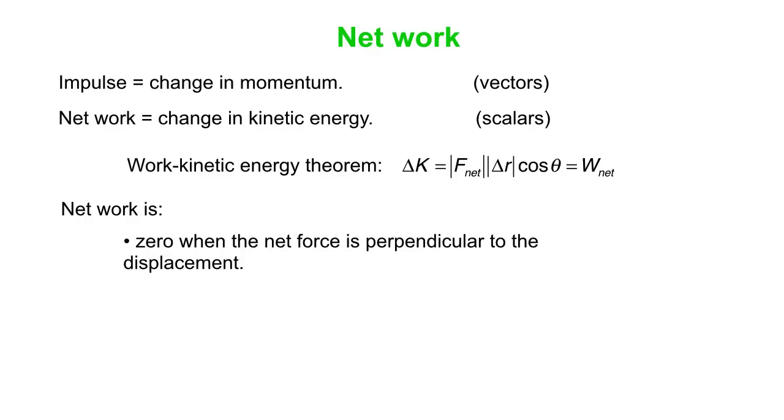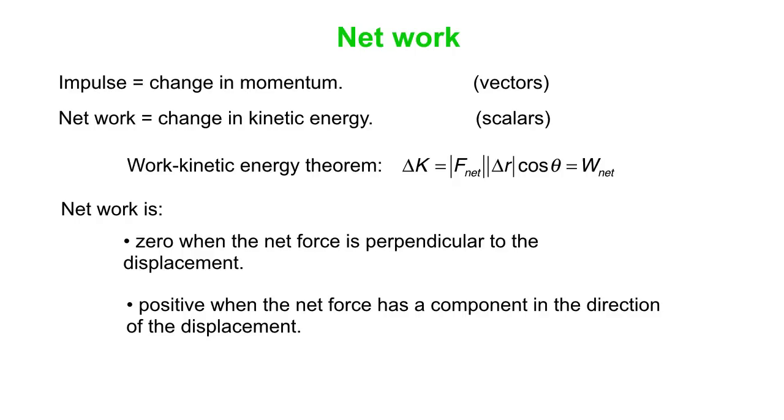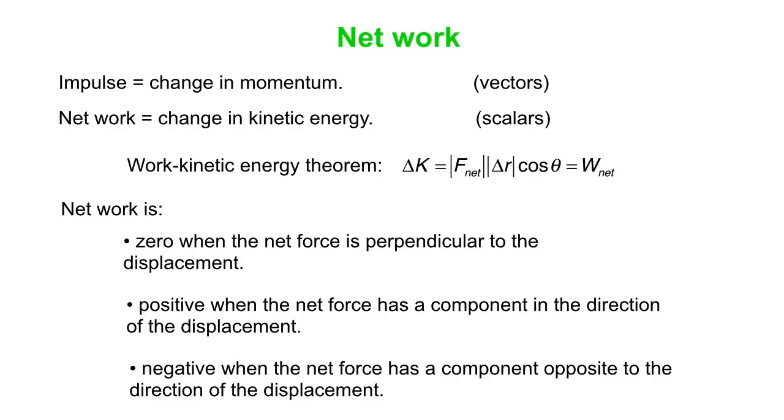The sign on the net work comes from the cosine theta piece of the equation. Cos theta gives you zero when theta is 90 degrees. In other words, when the net force is perpendicular to the displacement, there is no work being done. The change in kinetic energy or the net work can turn out to be positive if the net force has a component in the direction of the displacement. It can be all in the direction of the displacement, but at least if it has a component in the direction of the displacement, you'll get a positive result.